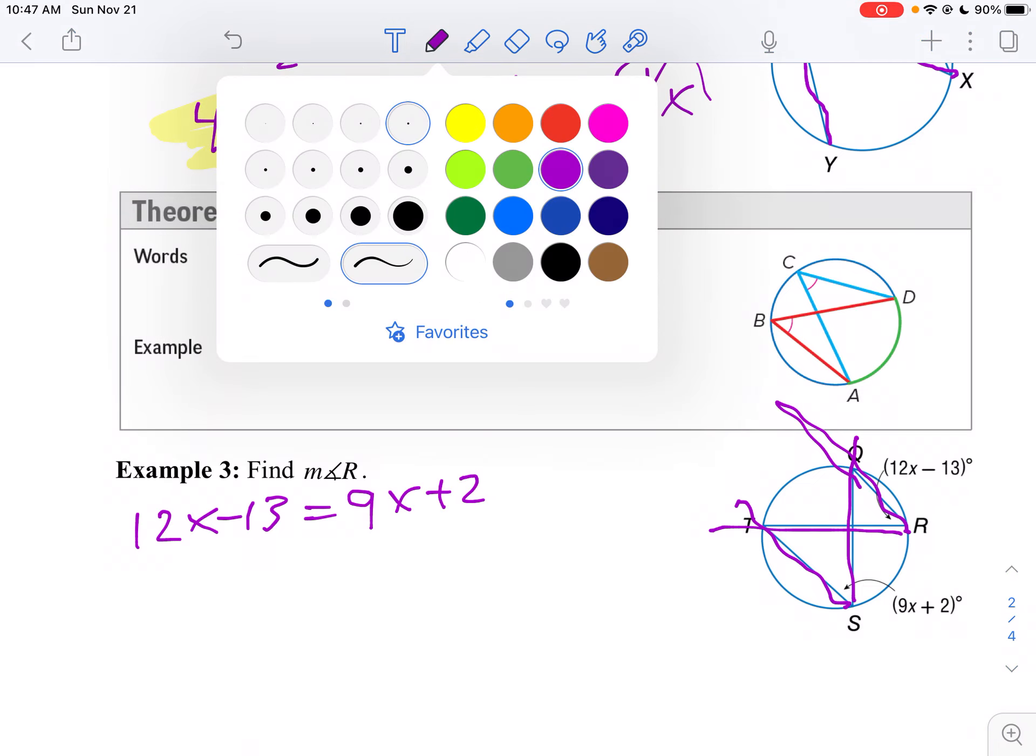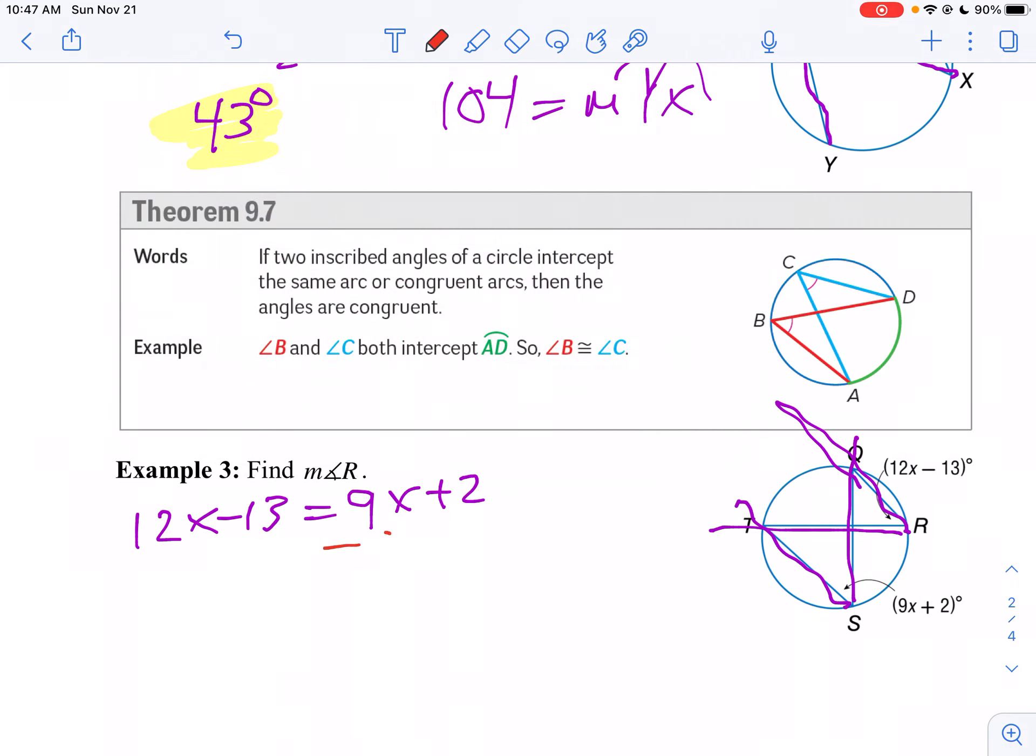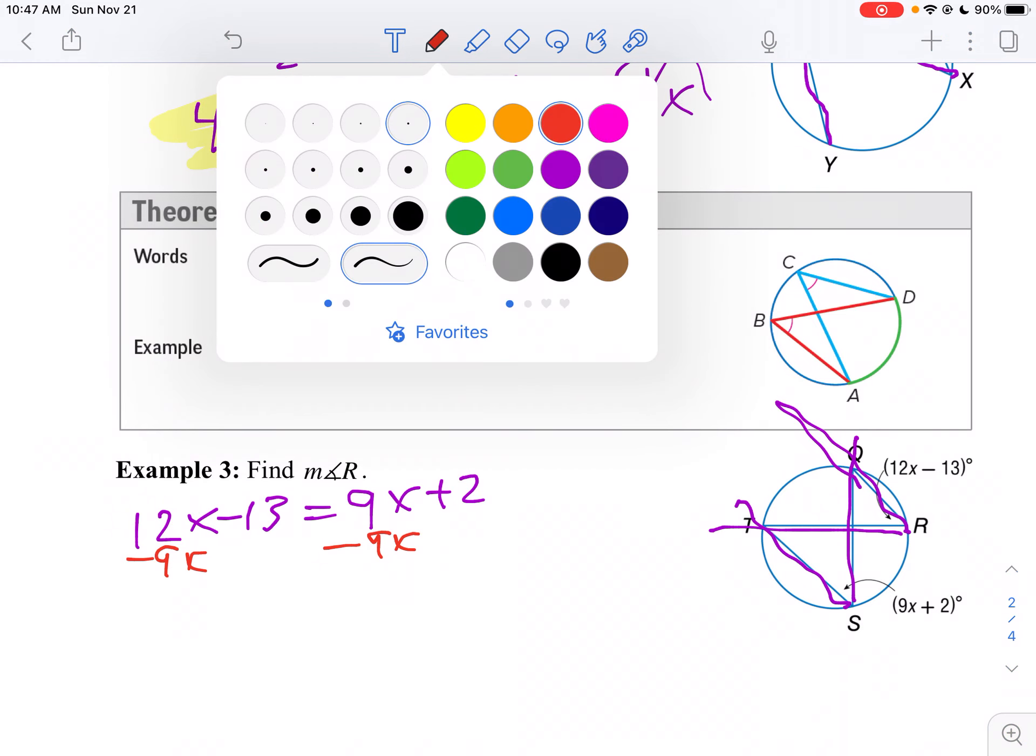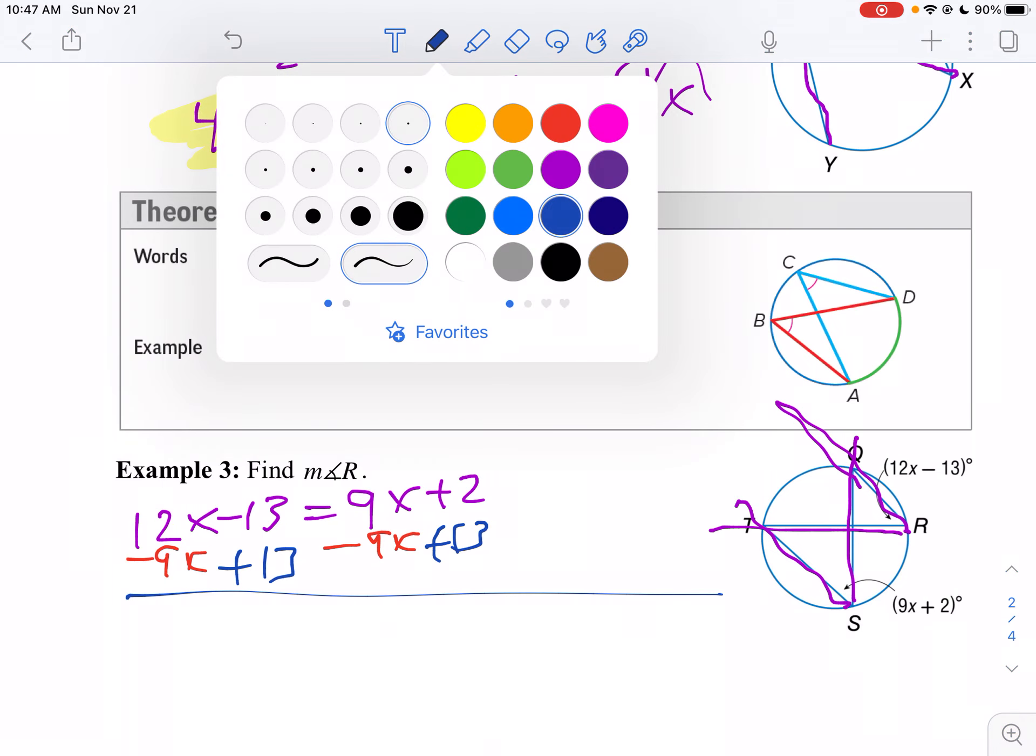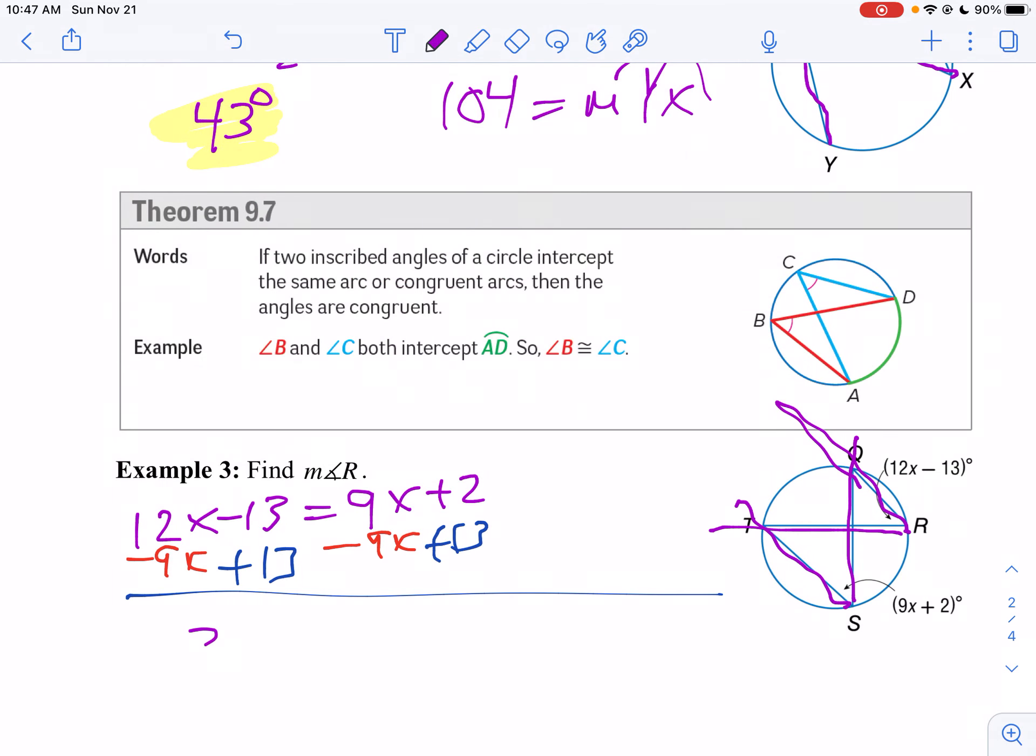I will subtract 9x from both sides. At the same time, let's add 13 to both sides. So I get all my variables on one side and my constant terms on the other side. So then we get 12 minus 9 is 3x. And 3x equals 15. So I divide both sides by 3. x equals 5.